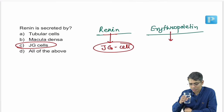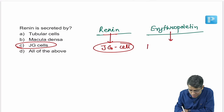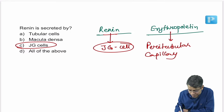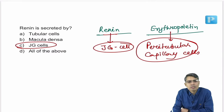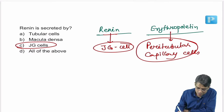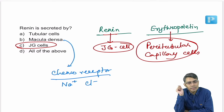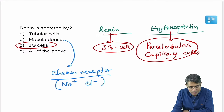Erythropoietin is produced by peritubular capillary cells of the kidney — not macula densa. Macula densa is a chemoreceptor cell that senses sodium and chloride. Erythropoietin stimulates RBC production by stimulating stem cells — specifically the colony-forming unit erythroblast.